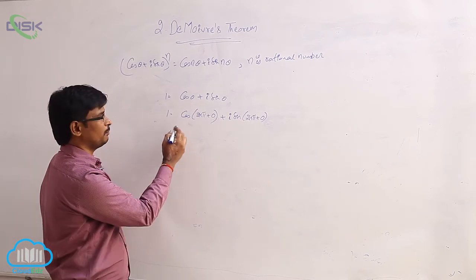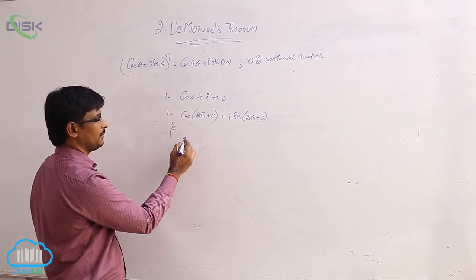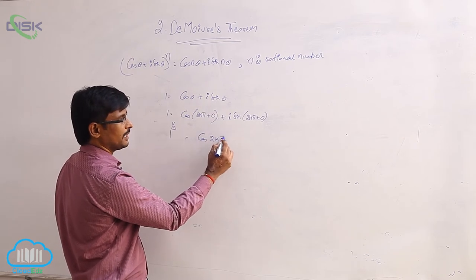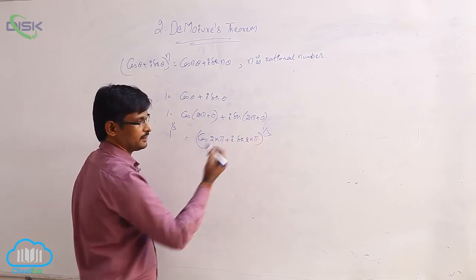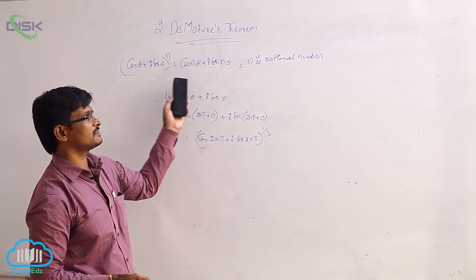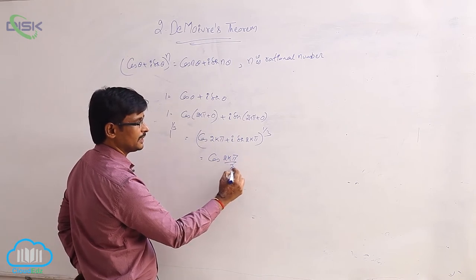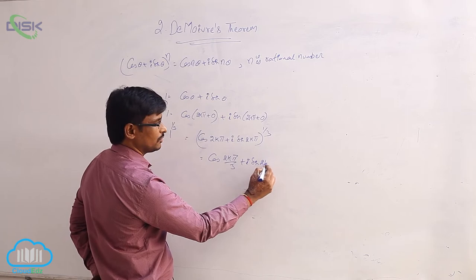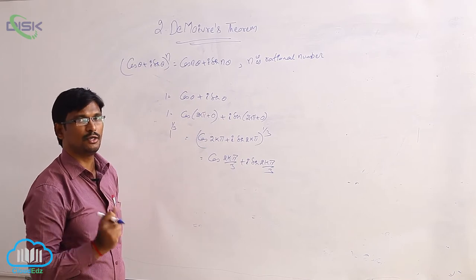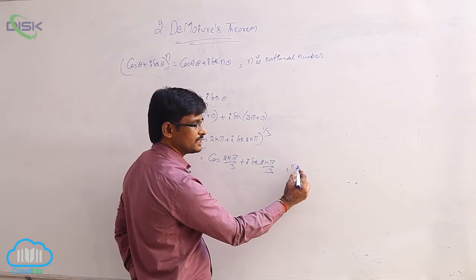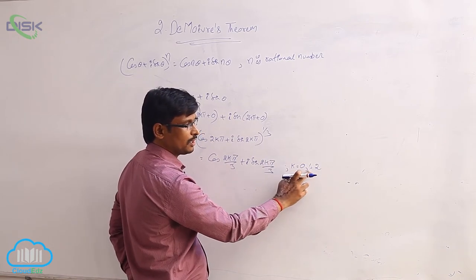For 1 to the power 1/3 — the cube roots of unity — we apply De Moivre's theorem: cos(2k pi) plus i sin(2k pi) raised to the power 1/3. Since the exponent is a fraction, De Moivre's theorem applies, giving cos(2k pi / 3) plus i sin(2k pi / 3). For cube roots there are totally 3 roots, where k ranges from 0, 1, 2.